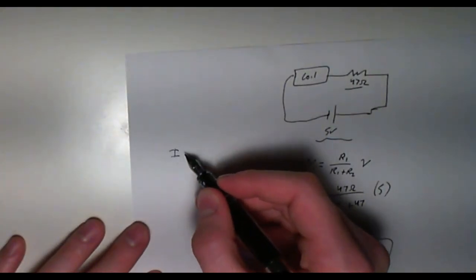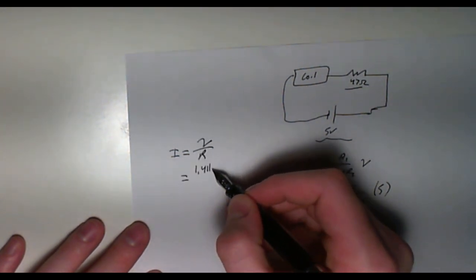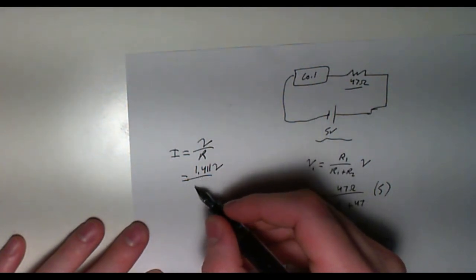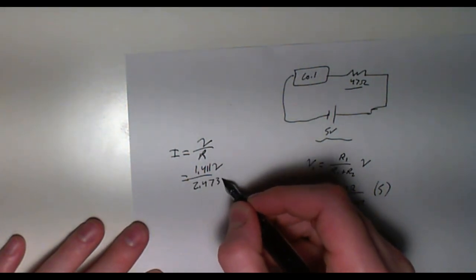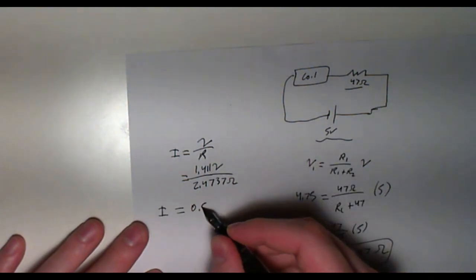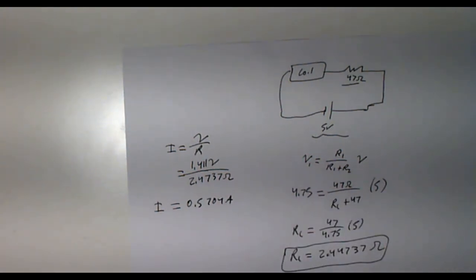Using Ohm's law and knowing the voltage across the AA battery powering the circuit is 1.411 volts, and we know our resistance of the coil, therefore we determine that the current flowing through the coil is approximately 0.57 amps.